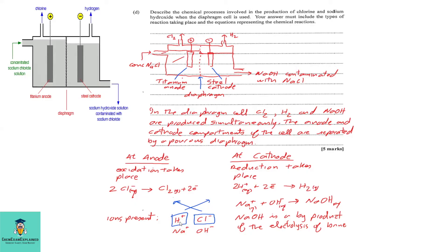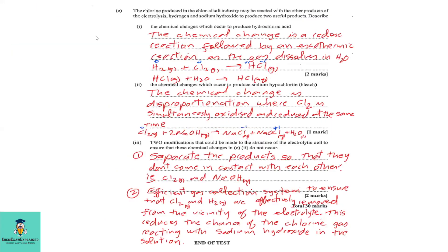When hydrogen ions are removed at the cathode and chloride ions are removed at the anode, what remains is sodium hydroxide. Therefore, sodium hydroxide is a byproduct of the electrolysis of brine. This explains all the equations and reactions taking place during the electrolysis of brine.